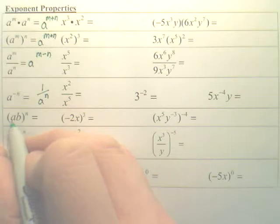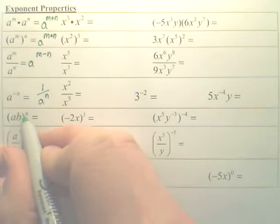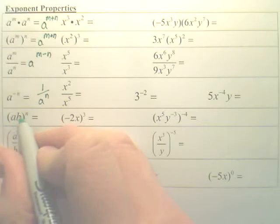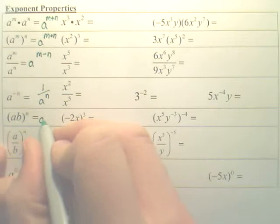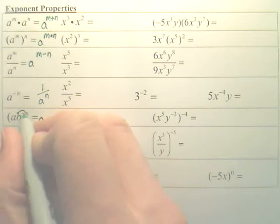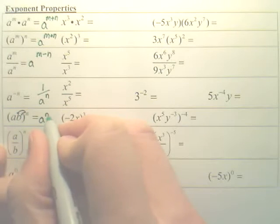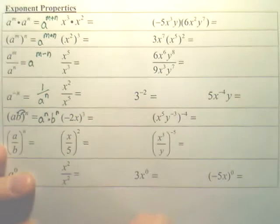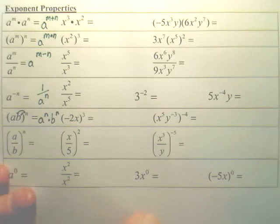Anytime you have two things multiplied to one power, that power is going to distribute to both pieces. Basically this N goes to both pieces, so you have A to the nth times B to the nth. The nth power goes to both pieces.